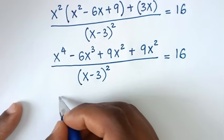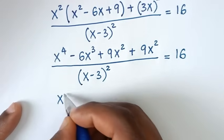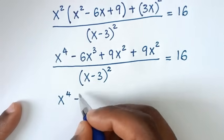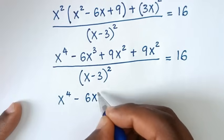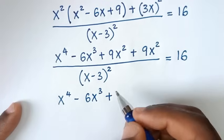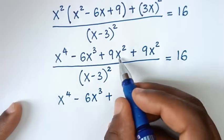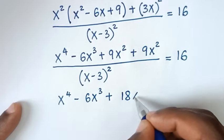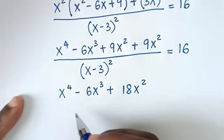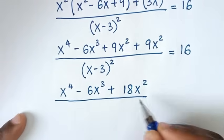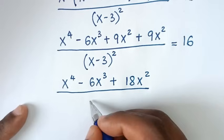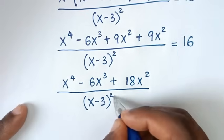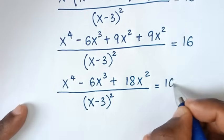In the next step, it will be x to the power of 4, minus 6x to the power of 3, then 9x square plus 9x square gives 18x square, all over x minus 3 bracket square, is equal to 16.